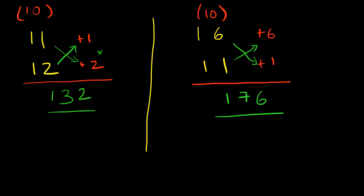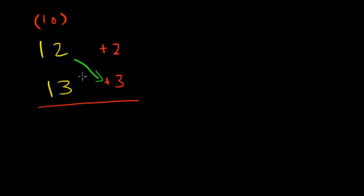Now let's move to some complex numbers. Let's do this one. 12 into 13. So our base is 10. So 10 plus 2 gives us 12. And 10 plus 3 gives us 13. And the next step is either you do 12 plus 3, or you do 13 plus 2, which is 15. And 2 times 3 is 6. 156 is your answer.